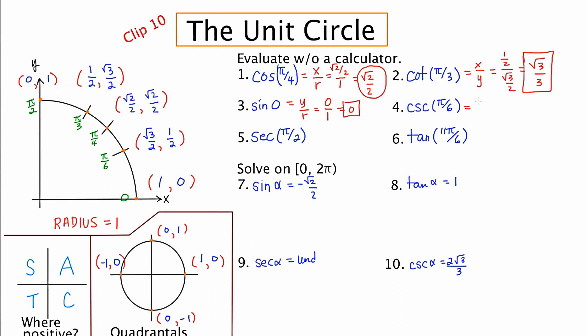Cosecant is R over Y. It's the reciprocal of sine. R is always one. So I'm going to go to the ordered pair for pi over six. And I'm going to find the Y value, which is one half. And one over one half is two.